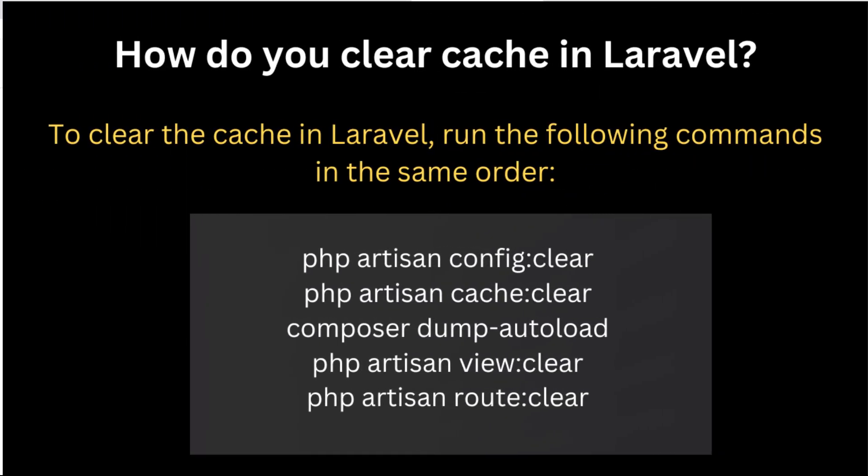How do you clear cache in Laravel? To clear cache, you can write these commands: php artisan config:clear, php artisan cache:clear, composer dump-autoload, php artisan view:clear, and php artisan route:clear.